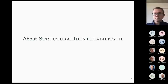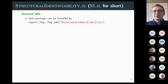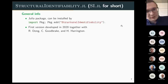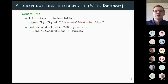Now let's go to the software which solves this problem. StructuralIdentifiability is a Julia package — registered, so you can install it like any other Julia package with pkg.add StructuralIdentifiability. It started in 2020 with my colleagues Ruben Dong, Christian Goodbreak, and Heather Harrington. Since then many other people were involved in development, and the package has evolved quite a bit.